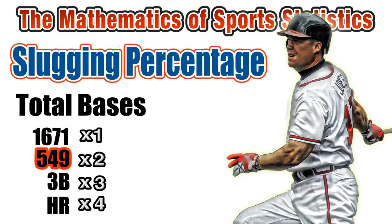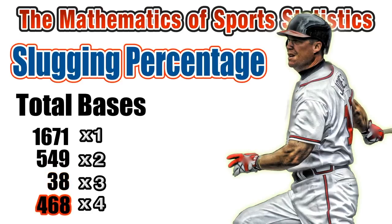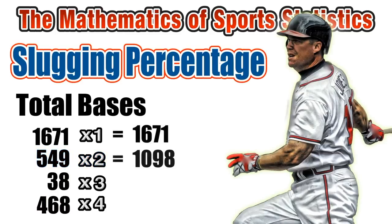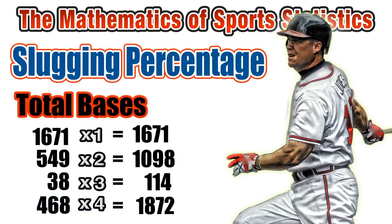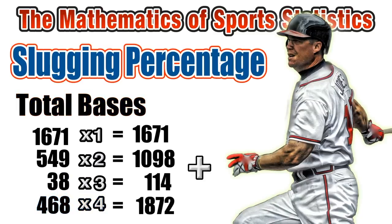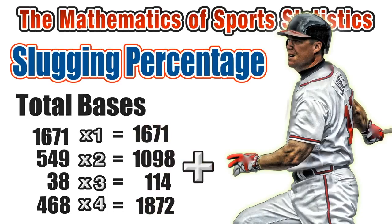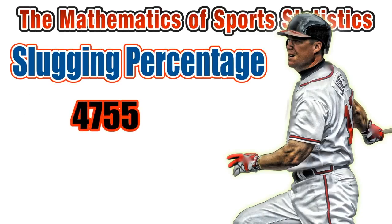...549 doubles, 38 triples, and 468 home runs. Next we do our multiplication and then add these four products together to find the number of total bases.